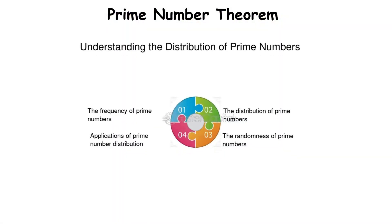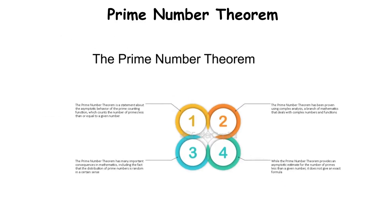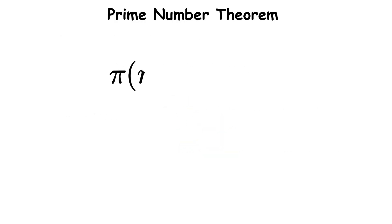The theorem describes how prime numbers become less frequent as numbers grow larger, but in a surprisingly predictable way. The theorem states that the number of prime numbers less than or equal to a given number n is approximately n divided by the natural logarithm of n.